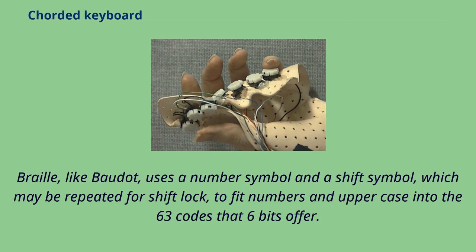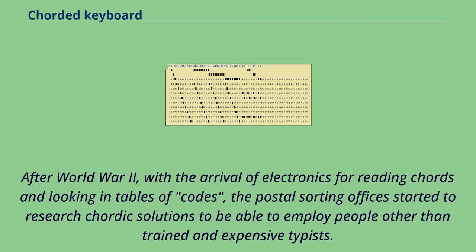Braille, like Baudot, uses a number symbol and a shift symbol — which may be repeated for shift lock — to fit numbers and uppercase into the 63 codes that six bits offer. After World War II, with the arrival of electronics for reading chords and looking up tables of codes, postal sorting offices started to research chordic solutions to be able to employ people other than trained and expensive typists.